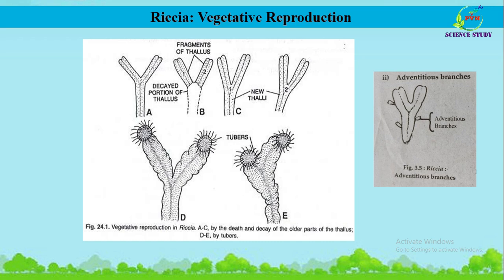The second vegetative reproduction type is adventitious branches. Here you can see the figure showing adventitious branches in the aquatic species of Riccia, that is Riccia fluitans. Adventitious branches develop from the ventral surface of the thallus in the midrib region. The death and decay of the connecting tissue detach the adventitious branches from the parent plant, and later these detached branches develop into new Riccia thalli.